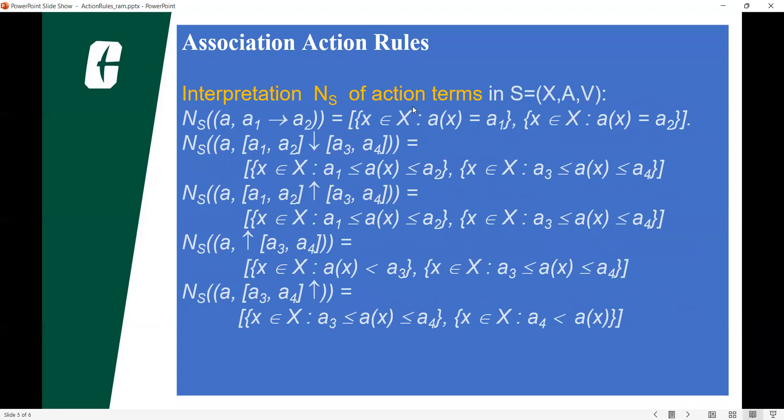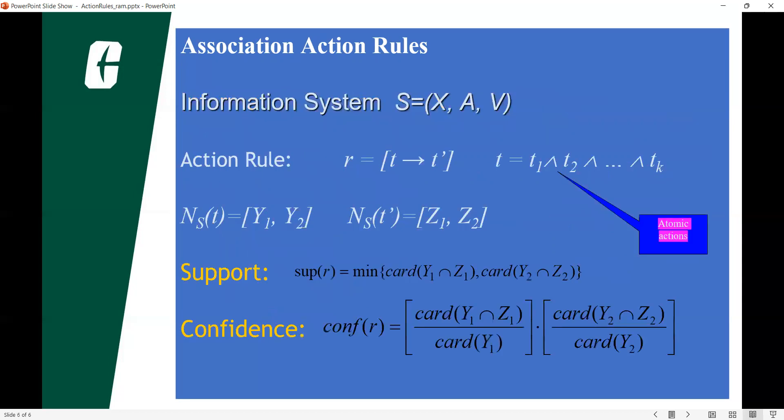And in association of number of sets, we can see here. And also, if you want to calculate information systems, that is from three values, like X, A, V. Here we can see that as we discussed, we can see support and confidence.